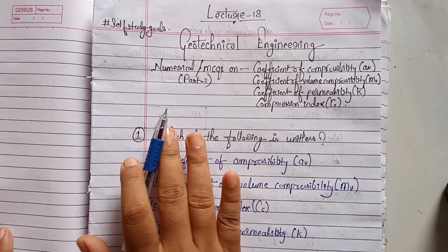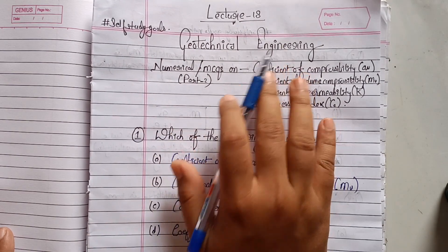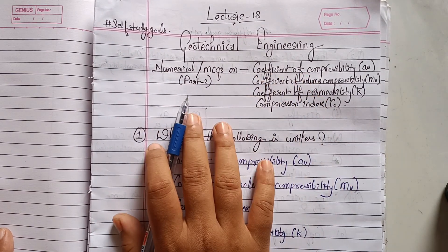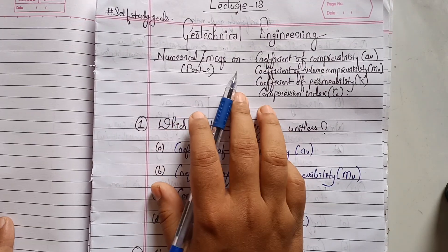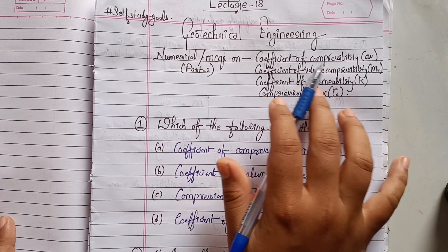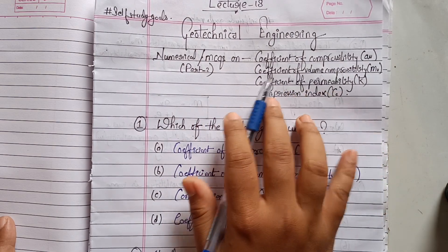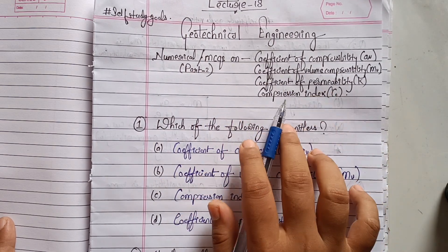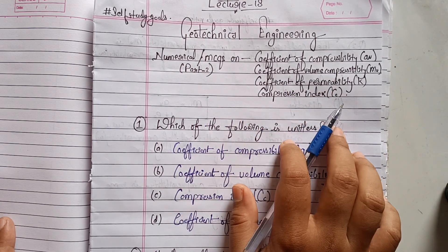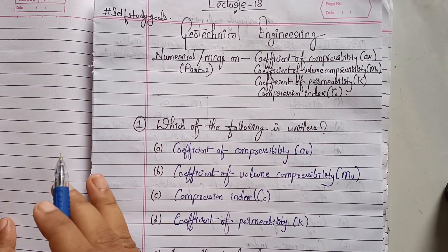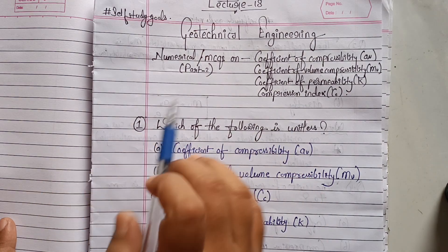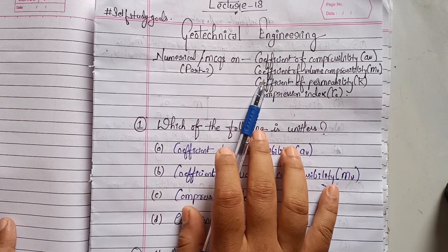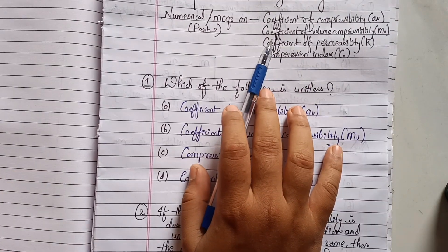Hey everyone, welcome back to my YouTube channel. This is Lecture 18 of Geotechnical Engineering. In this lecture we are going to see the MCQ part of coefficient of compressibility, coefficient of volume compressibility, coefficient of permeability, and compression index. In Part 1 we covered the numerical part of this lecture, so now we will see the MCQ part.